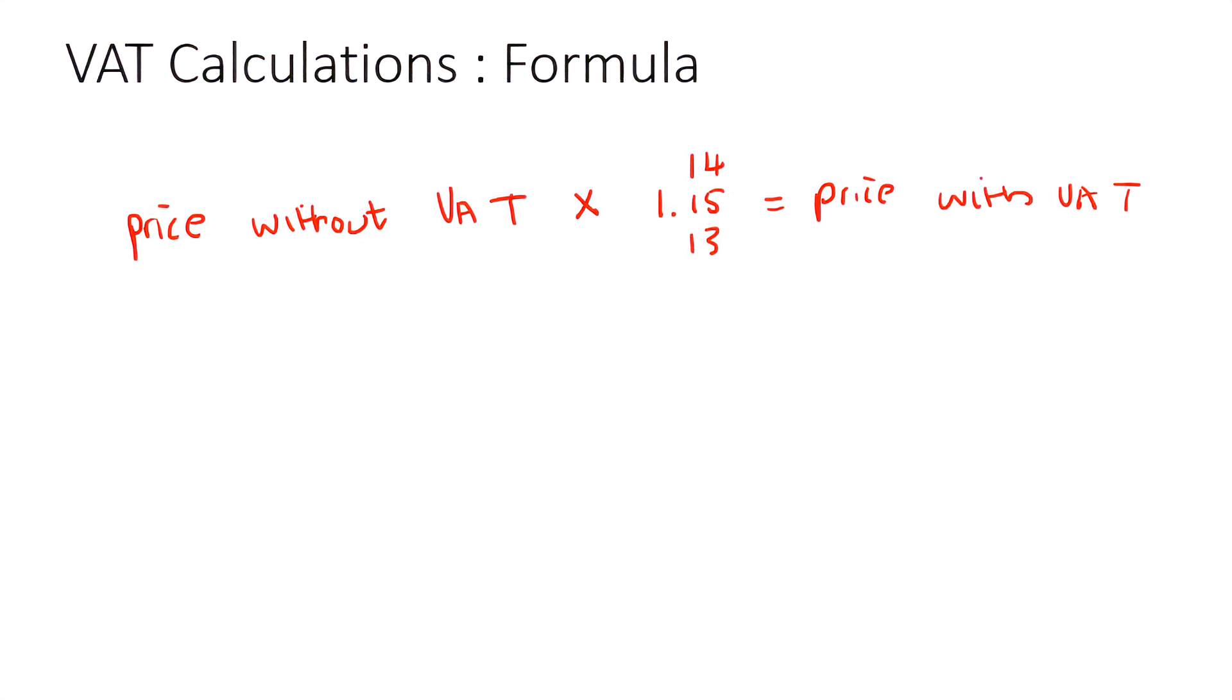Now your teacher might use a different one. They might have the price without VAT multiplied by 115 over 100. Now that 115 over 100 is 1.15. So I'm just taking a little bit of a shorter version. And that's where I'm getting the 1.15 from. So let's just write this out again. So I'm going to go price without, multiplied by 1.15 is equal to the price with.